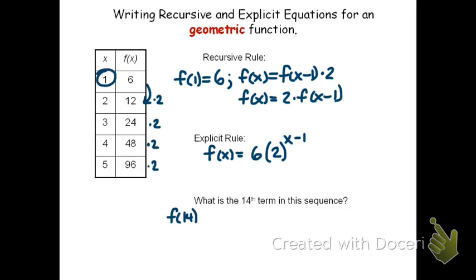So, to find f of 14, we'll take 6 times 2, raised to the 14 minus 1. Now, it's going to be simpler just to say 14 minus 1 is 13. Now, you're going to need a calculator for this, and we would type in 6 times 2, use your exponent button, 13.